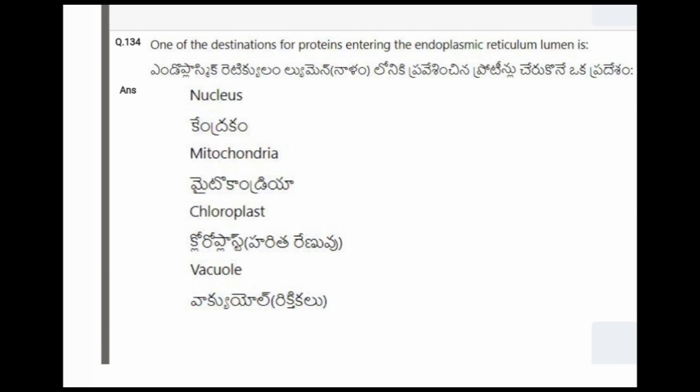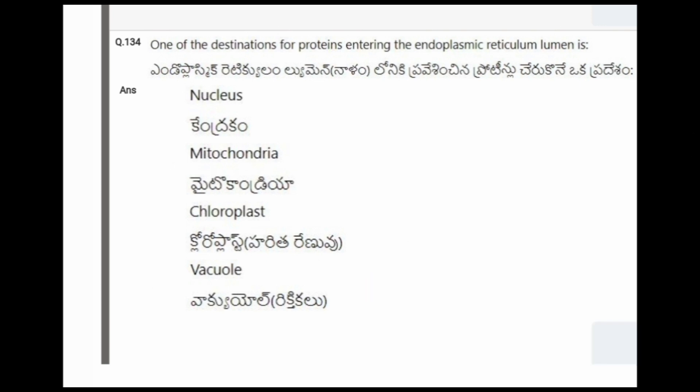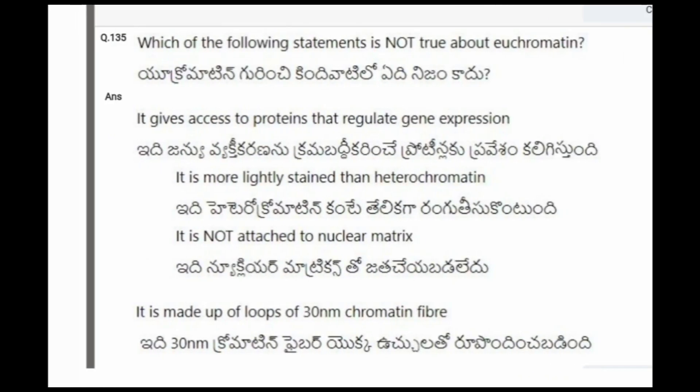Next question: One of the destinations for proteins entering the endoplasmic reticulum lumen is? The options are nucleus, mitochondria, chloroplast, vacuole. The correct option is vacuole.